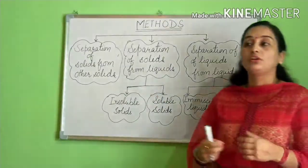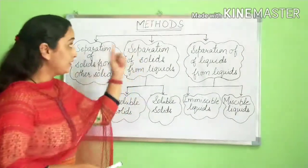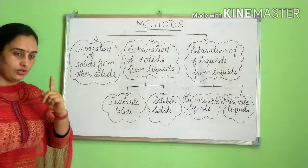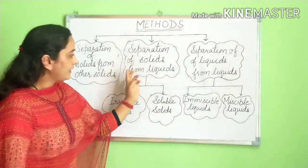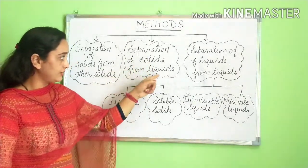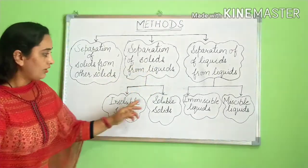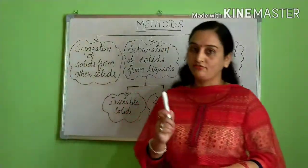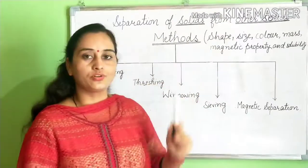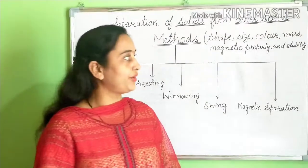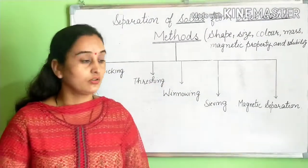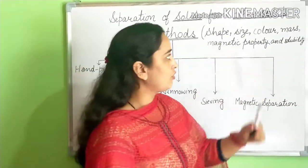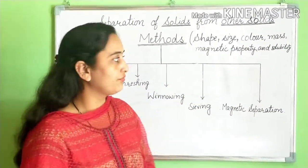When the components are very tiny, they may not even be visible to our naked eyes. We decide the method by looking at the type of mixture. For example, if we want to separate solid from other solids, we apply a different method. For solids from liquids, we check whether it is insoluble or soluble. For liquids from other liquids, we check if they are immiscible or miscible liquids.